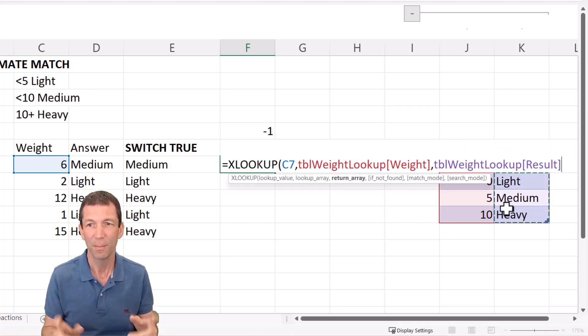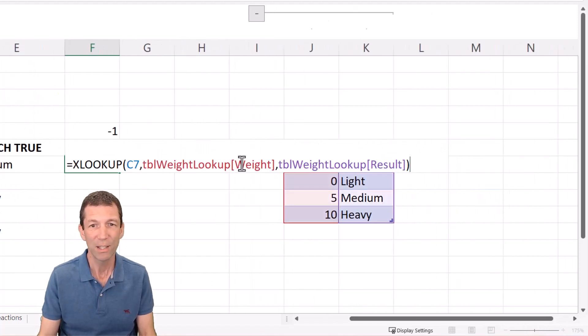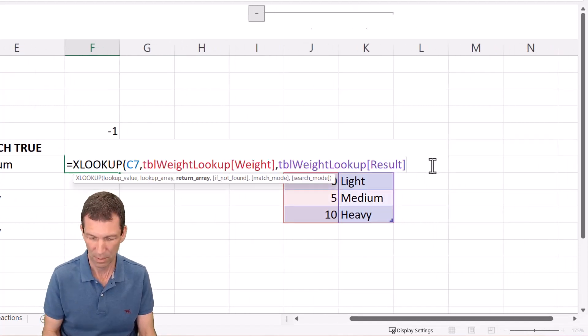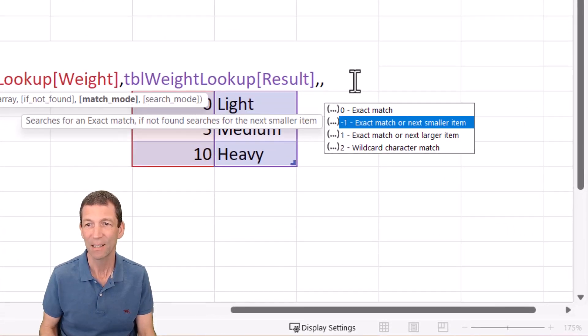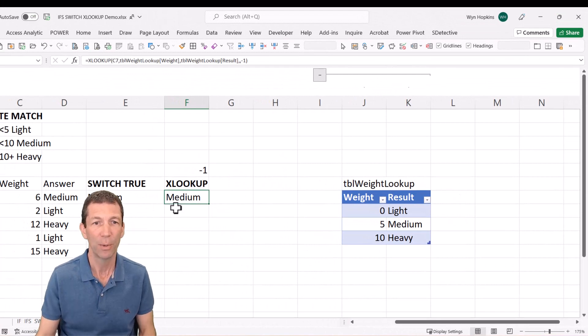But if I press enter I get an NA because there's no exact matches. So what I need to do is a comma, match mode. Okay exact match or next smaller item, the minus one option, close the bracket and there we go.